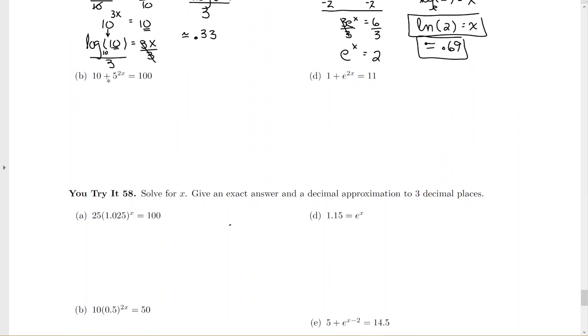For letter b, same thing. I see addition, so I'm going to have to undo addition subtraction property by doing a subtracting step here. 5 to the 2x equals 90. And again, this is my exponential. So I can't divide both sides by 5. I've got to rewrite it as a logarithm. Log base 5 of 90 equals 2 times x. And then divide both sides by 2. So my exact answer is log base 5 of 90 divided by 2.